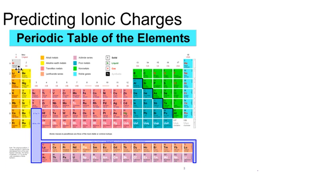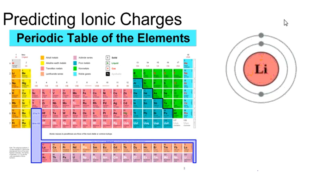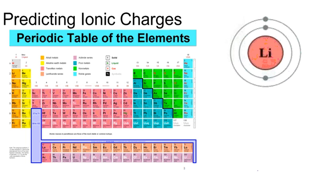We're going to use lithium as an example. Lithium is in group one of the periodic table. It has an atomic number of three. That means it has three protons and three electrons.